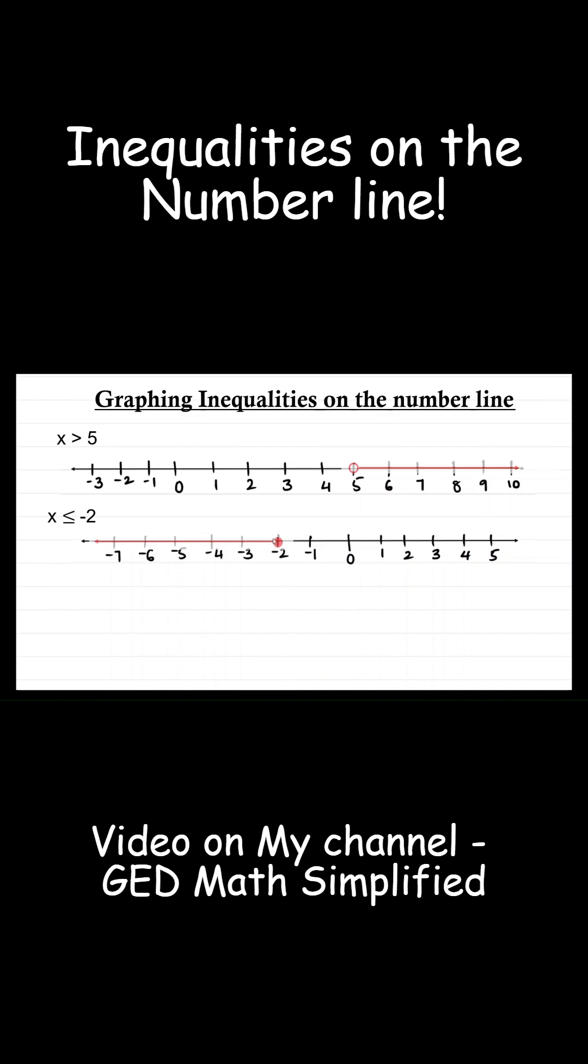Because minus 2 is included, so this circle is a shaded circle. So when the number is included, shade the circle at the number. When the number is not included as in the first example, do not shade the circle.